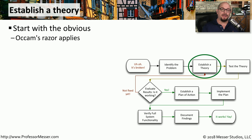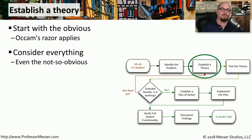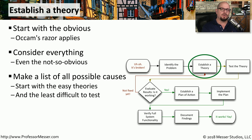Now that we've gathered information, we need to establish a theory about why the problem is occurring. With most things, the simplest explanation is often the most likely — use Occam's razor to make a list of possible reasons the problem is occurring. Sometimes the explanation may be complex, so think about all possible reasons, even those not completely obvious at first glance. Start with the easiest issues to resolve at the top and the more complex ones near the bottom, so during testing you can start with the least difficult issues first.